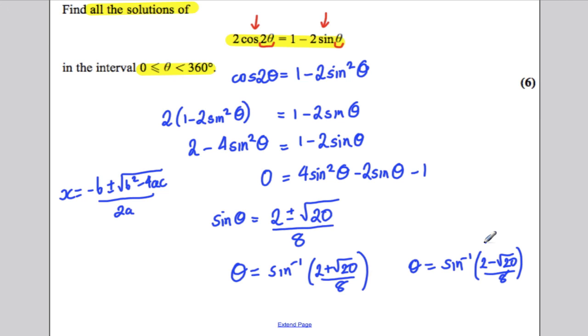Now, making sure your calculator is in fact in degrees mode here, so the inverse sine of 2 plus the square root of 20 over 8. Work that out and you get yourself 54 degrees. So theta is 54 degrees,